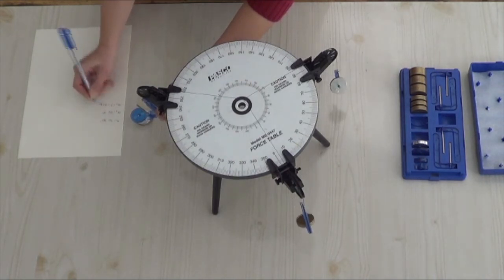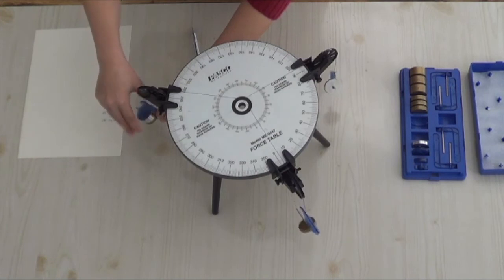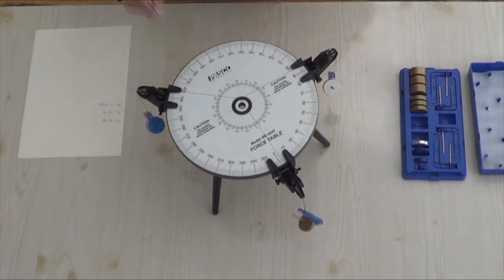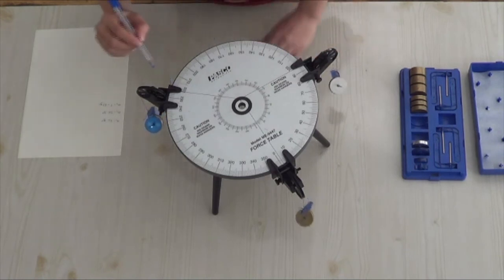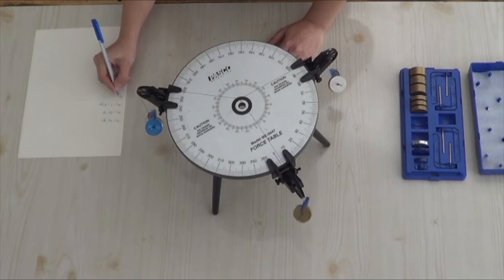Since you have managed to obtain all the mass values, you may now record θ3, which is the angle associated with M3. θ3 can be found by subtracting 180 degrees from the numerical value that the third string is aligned with.